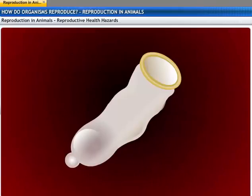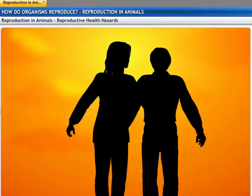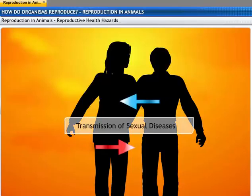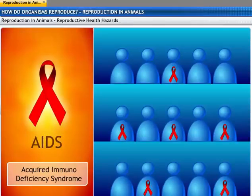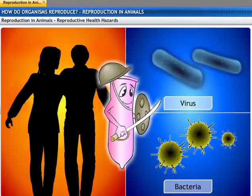Hence, it is better to use a condom during sex, as there is close contact between bodies which could result in the transmission of sexually transmitted diseases. Bacterial infections such as gonorrhea and syphilis, and viral infections such as warts and HIV or AIDS, are some of the diseases that are transmitted sexually. AIDS — Acquired Immunodeficiency Syndrome — is the infection causing havoc in humans today. Using a condom during sexual intercourse helps prevent transmission of many of these infections, though it fails if not used properly.